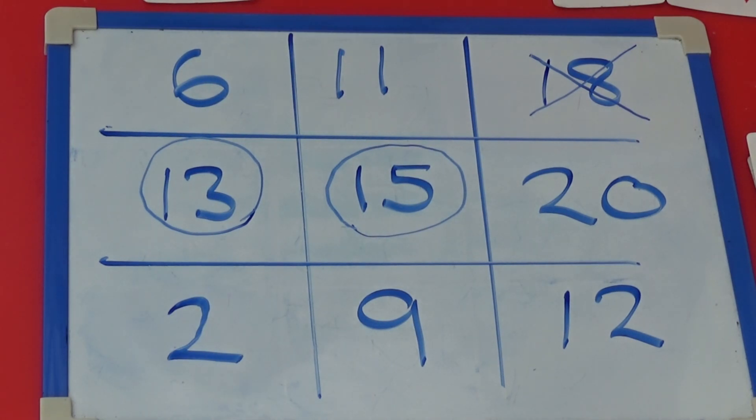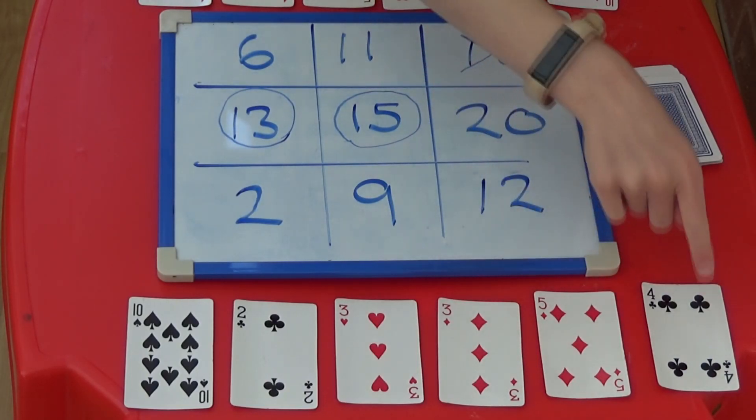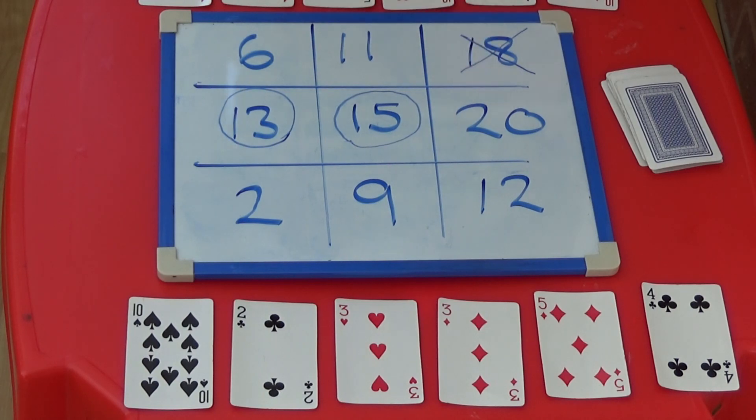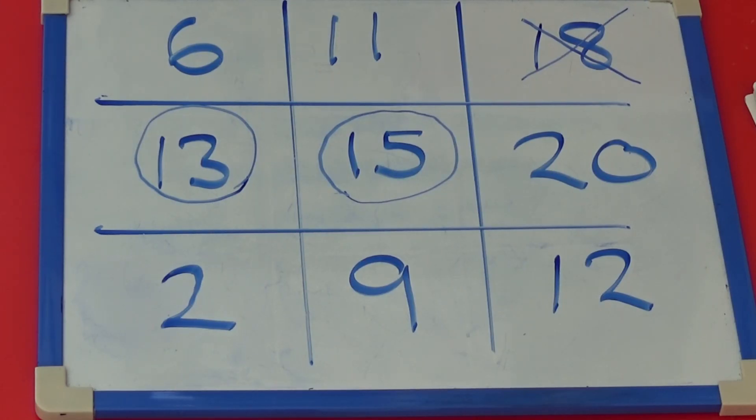As with normal tic-tac-toe or noughts and crosses, you aren't only trying to make a line yourself. You also need to keep an eye on what your partner is doing so you can try and block them from being able to make a line. They can block my line by multiplying 5 and 4 which makes 20. So they would put a cross on 20.